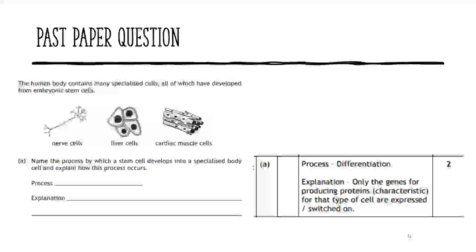For this one, first off the process — just looking for you to state the key term, which is differentiation: the process by which a stem cell develops into a specialized body cell. For the second part, explaining how this process works: cells specialize or differentiate by only producing proteins from the relevant genes. As long as you convey the idea of selecting and using particular genes, you should pick up the mark. Only the genes for producing proteins or characteristics for that cell type are expressed or switched on.